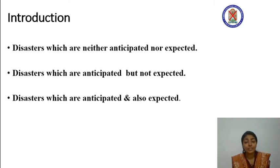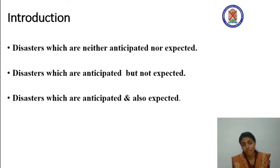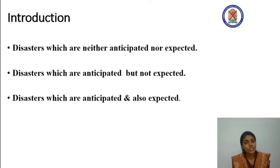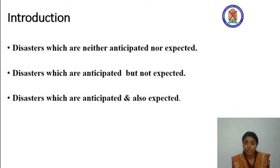We can classify disasters into three categories: disasters which are neither anticipated nor expected, disasters which are anticipated but not expected, and disasters which are anticipated and also expected. In the case of the first category, those disasters are something beyond the comprehension of human beings and we have nothing to do with that. But in the case of the second and third categories, precautionary measures as well as preparedness play a very crucial role in reducing the risk and minimizing the loss.